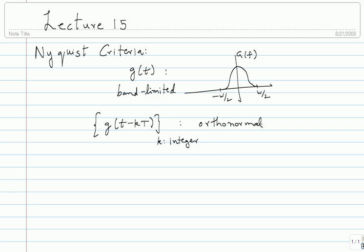Orthonormality is not a big deal — orthogonality is the major thing. The shifts have to be orthogonal with respect to each other. Once they are orthogonal, if you normalize one, everything gets normalized. They have to be orthonormal, and the Nyquist criteria gives you a condition for this.